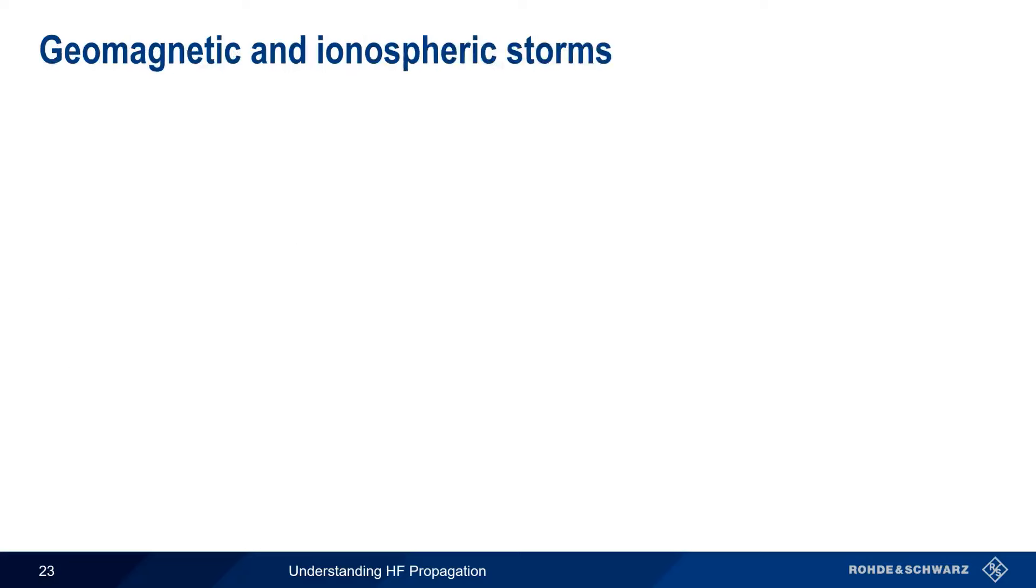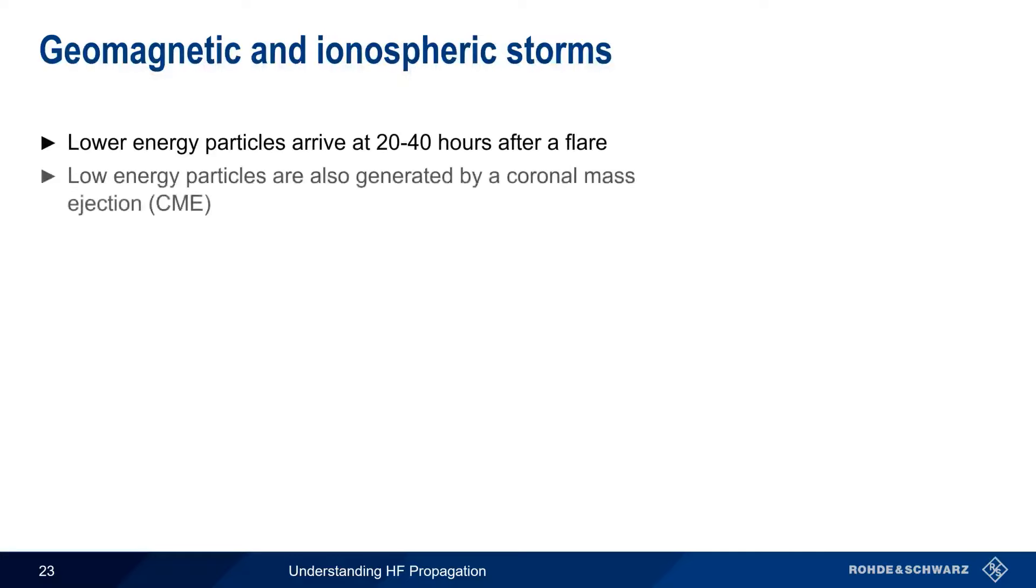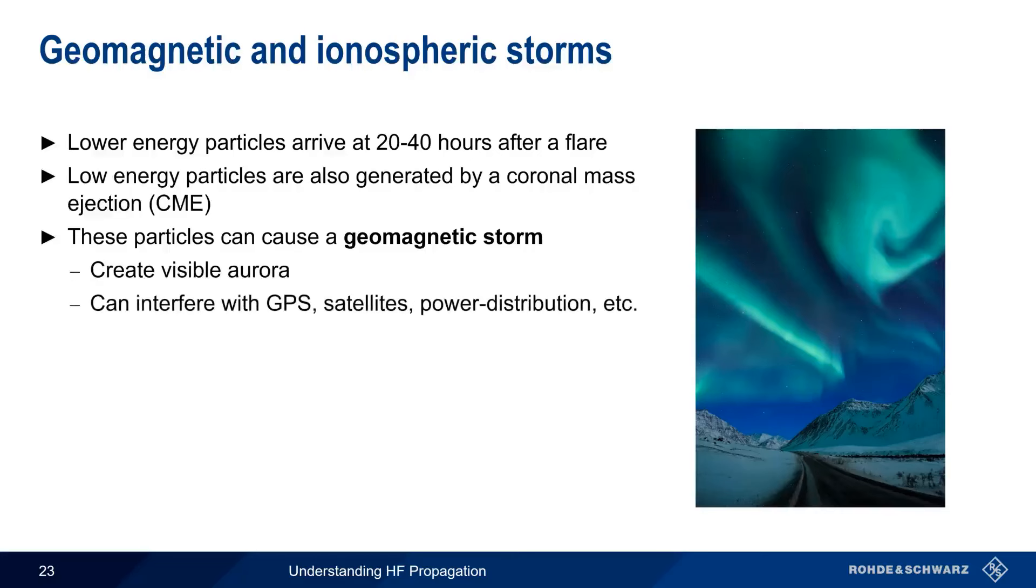Geomagnetic storms are caused by lower energy particles arriving at the Earth. This occurs 20 to 40 hours after a solar flare. These particles can also be generated during something called a coronal mass ejection, which can occur independently of a solar flare. In either case, these particles can cause geomagnetic storms. Geomagnetic storms produce visible aurora, but they also can interfere with GPS signals, satellites in general, terrestrial power distribution networks, etc.